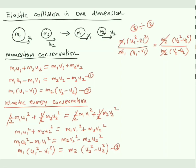Each numerator is in the form a² − b² = (a+b)(a−b). The (a−b) factor cancels with the denominator on both sides. On the left we are left with (u1 + v1), and on the right with (v2 + u2).